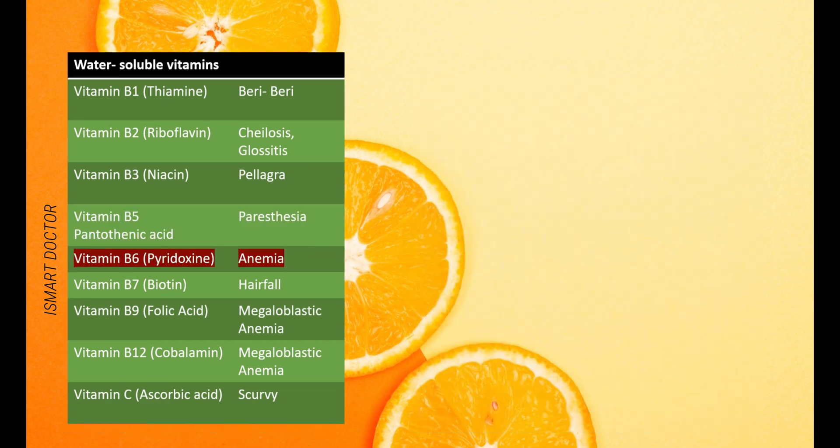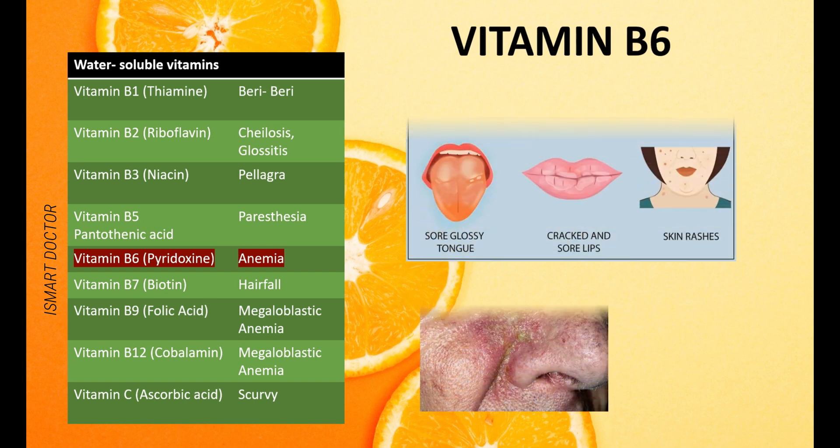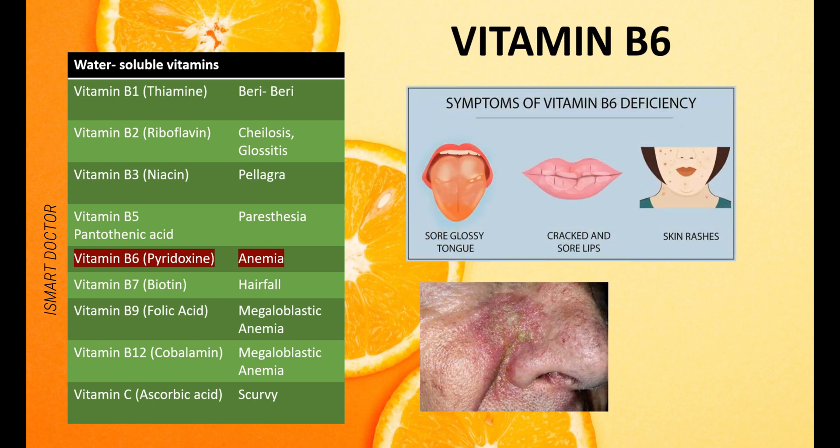B6, Pyridoxin deficiency causes anemia, dermatitis, skin rashes, and sore lips. There are skin conditions and anemia associated with B6 deficiency.